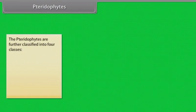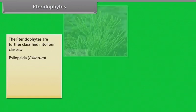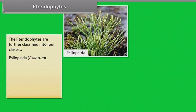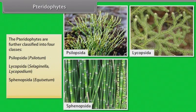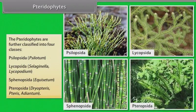The pteridophytes are further classified into four classes: Psilopsida like Psilotum, Lycopsida like Selaginella and Lycopodium, Sphenopsida like Equisetum, Pteropsida like Dryopteris, Pteris, Adiantum.